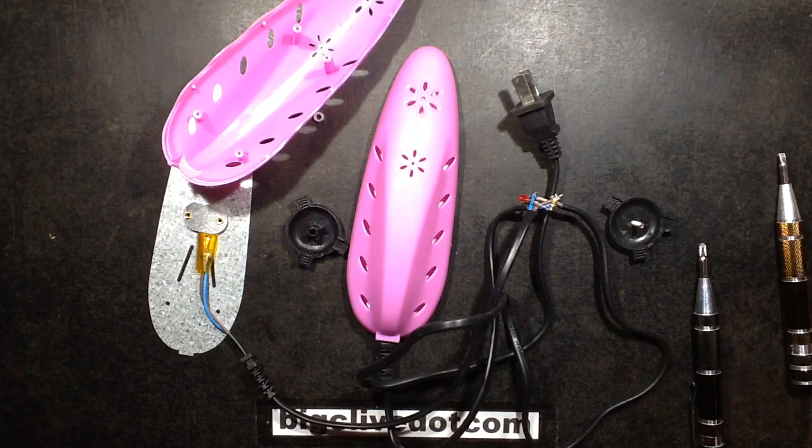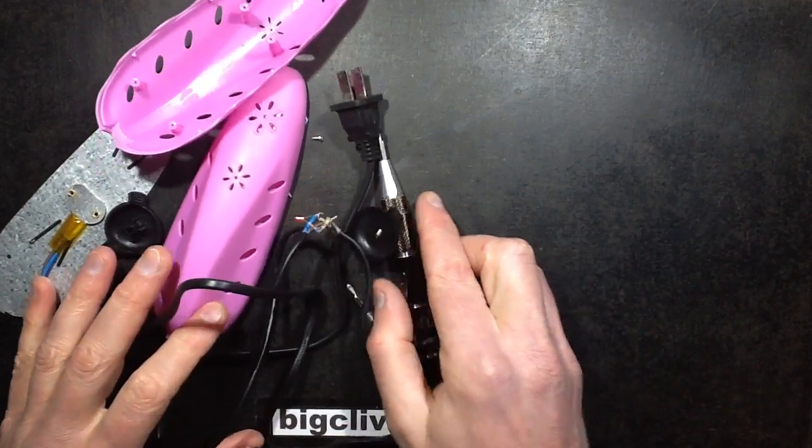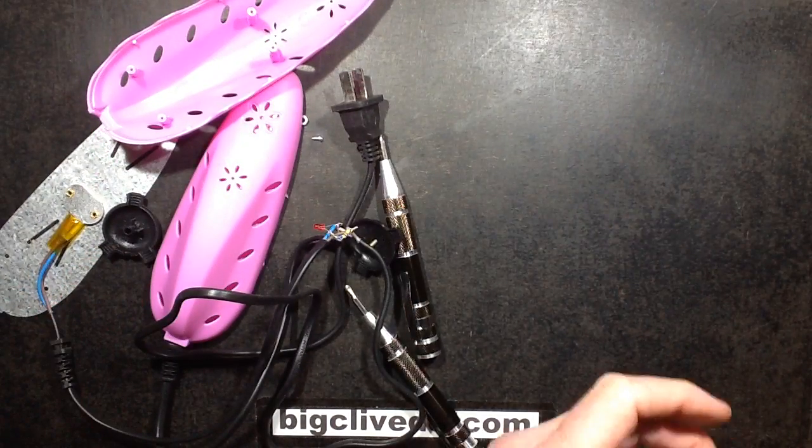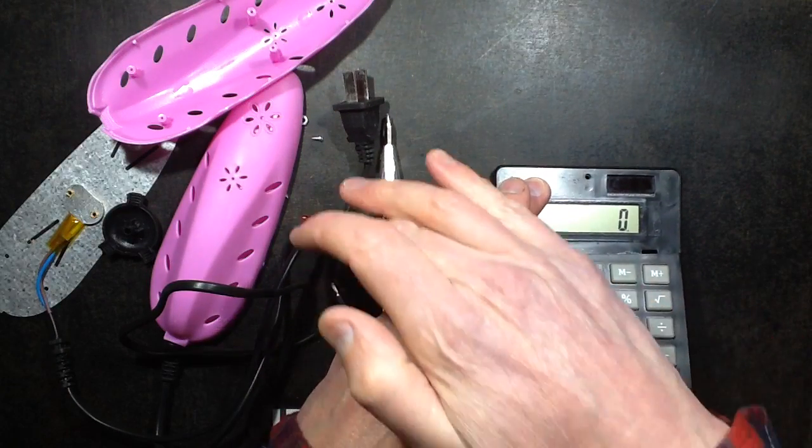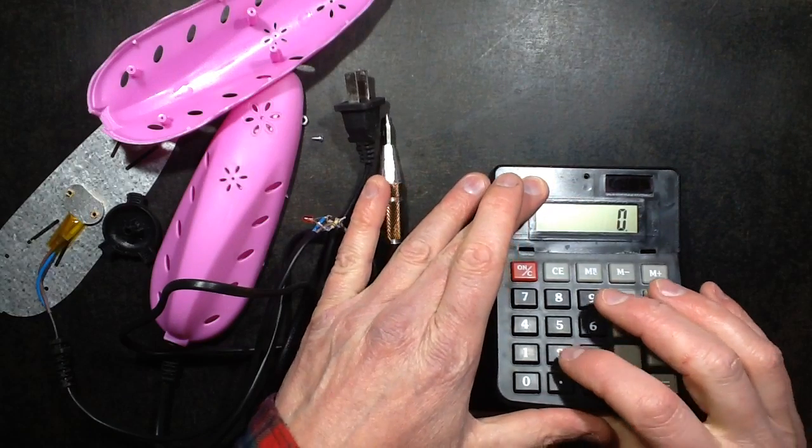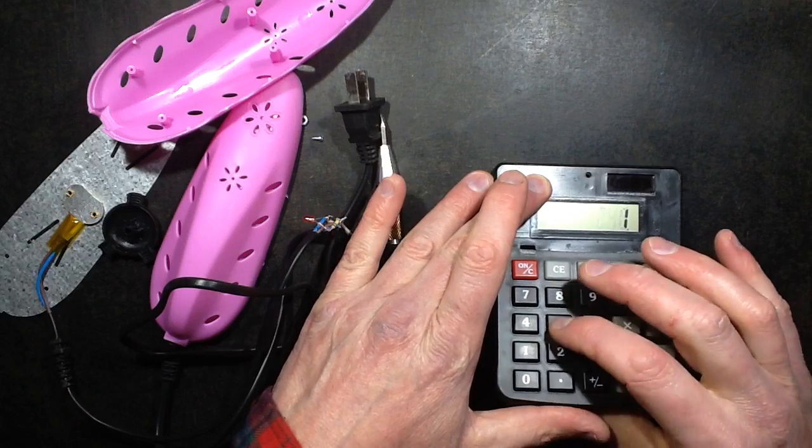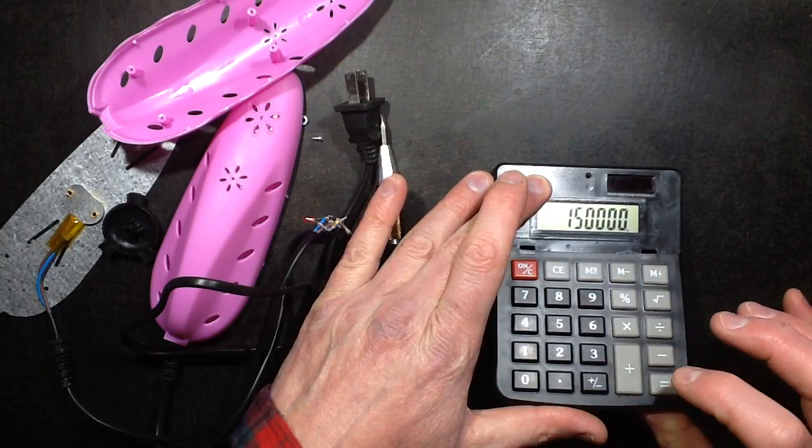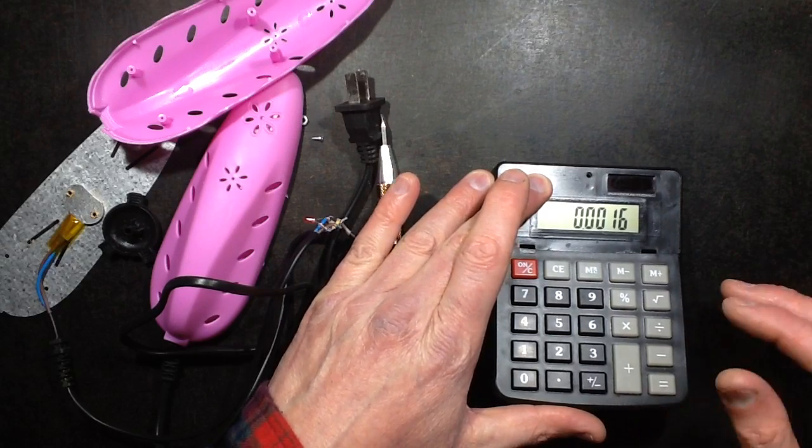Let's do the maths for the power dissipation of the resistor. So RMS value of 240 volts. I equals V over R. The LED is going to be about 2 volts. So 240 divided by 150K equals 1.6mA but only half wave.